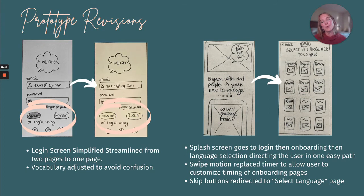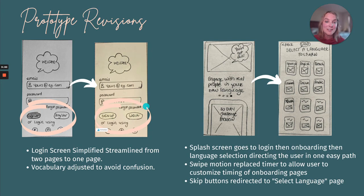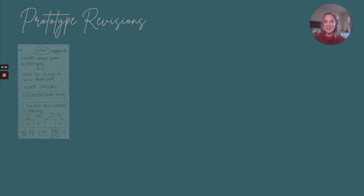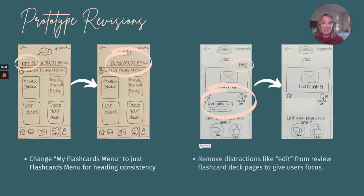Here's a sneak peek at our prototype revisions. We updated the language on the sign-in page to say sign-up and login, which was a lot less confusing for most of our users. We also redirected the onboarding page directly to the choose your language step so that nobody missed it, which we found was a little tricky to find in earlier versions of the app. We also changed the three-dot navigation, as a lot of our participants were trying to swipe to a more natural step one, step two, step three for clarity and direction.